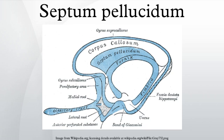The septum pellucidum is a thin, triangular, vertical double membrane separating the anterior horns of the left and right lateral ventricles of the brain. It runs as a sheet from the corpus callosum down to the fornix structure. The septum pellucidum is located in the midline of the brain, between the two cerebral hemispheres.